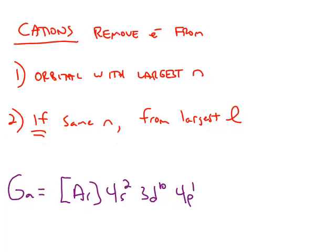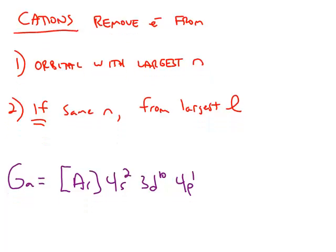Making cations is a little more complicated. When you're removing electrons, the first thing you look for is the largest value of the quantum number n, and that orbital's electron will be removed first. You only use step number 2 if the values of the orbitals have the same n, in which case you choose the largest l value.